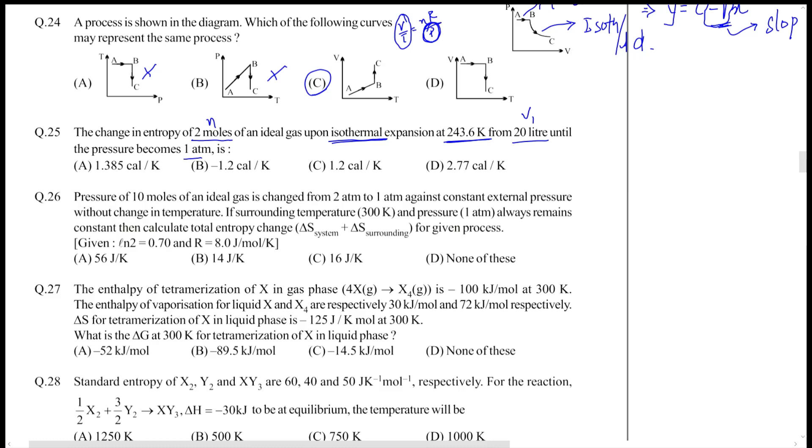It's an isothermal process. For an isothermal process, we already know that the entropy change delta S can be written as nR ln of V2 by V1.